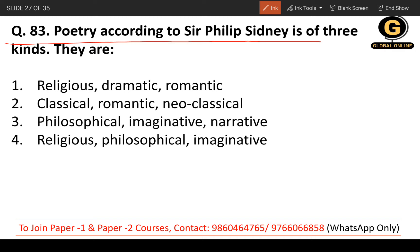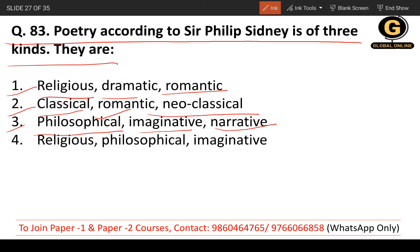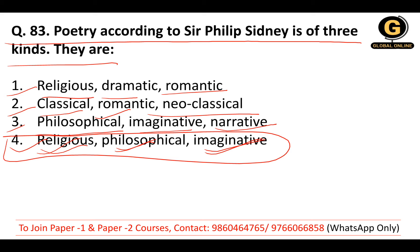Question 83: Poetry, according to Sir Philip Sidney, is of three kinds. The options are: religious, dramatic, romantic; classical, romantic, neo-classical; philosophical, imaginative, or narrative; or religious, philosophical, imaginative. Sir Philip Sidney talked about three kinds — religious, philosophical, and imaginative — so the fourth option is the correct answer.